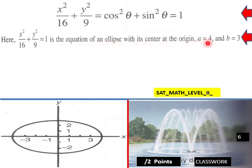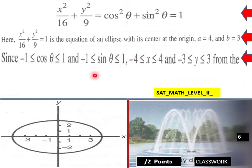X squared over 16 plus Y squared over 9 equals 1 is the equation of an ellipse with its center at the origin, a equals 4 and b equals 3. Since -1 ≤ cos θ ≤ 1 and -1 ≤ sin θ ≤ 1,